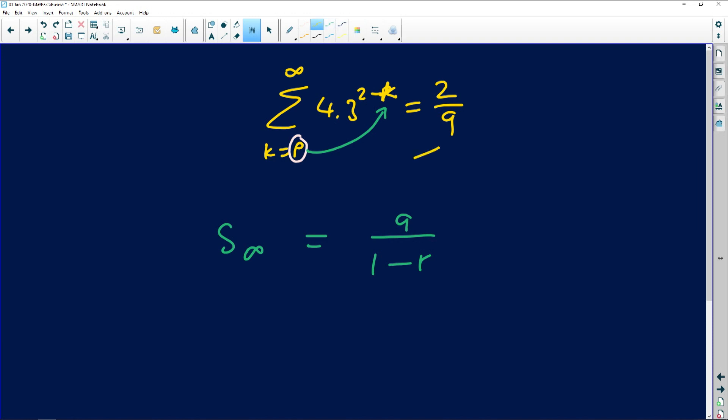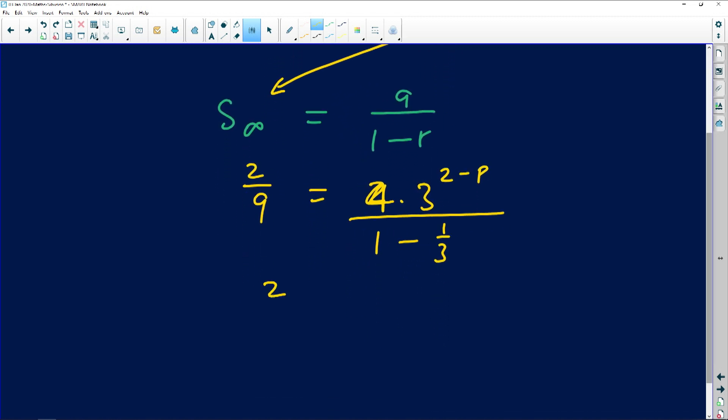What do we have? We do have the sum to infinity. It was given to us. It is 2 over 9. What is your a? Your a is what you get when you put p there. So we have 4 multiplied by 3 to the power 2 minus the first number that you'll need to substitute, which is p. That's how you'll get your t1 minus your r value, which is also going to come out as a third. It's the same as the sequence that you're working with at the top. So 2 over 9 is 4 times 3 to the power 2 minus p over 2 over 3. It's going to be 2 over 3 at the bottom.